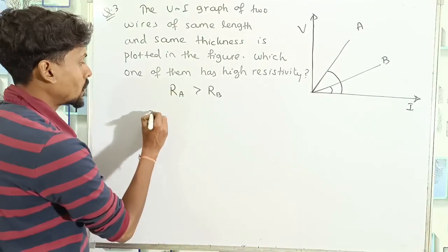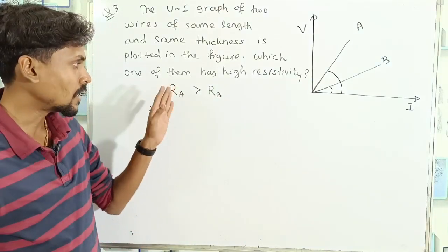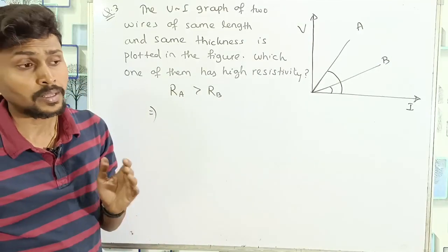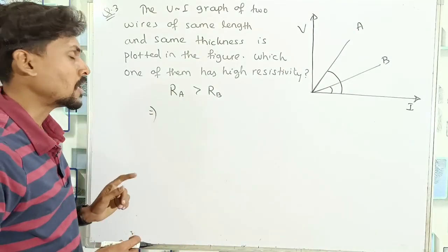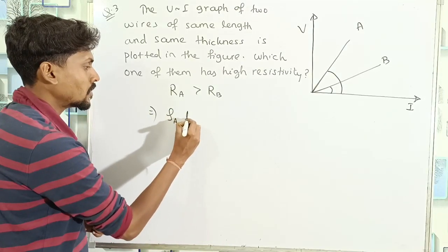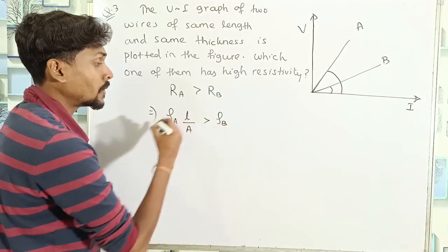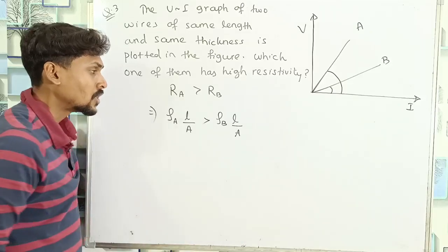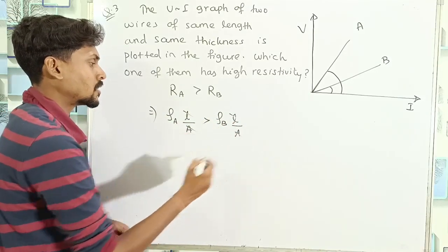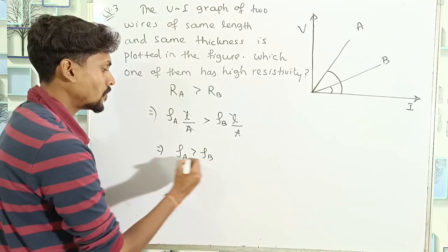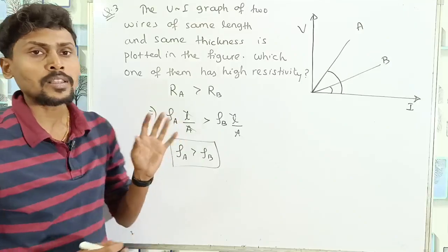Since resistance R = ρL/A, and both conductors have the same length L and the same area of cross section A, but are made from different materials with different resistivities — if resistance of A is greater than resistance of B, then the L/A terms cancel, and therefore the resistivity of A is greater than the resistivity of B. So material A has higher resistivity compared to material B.